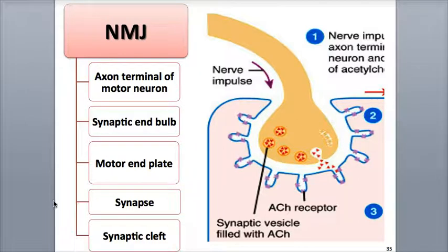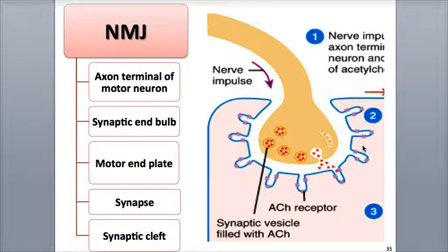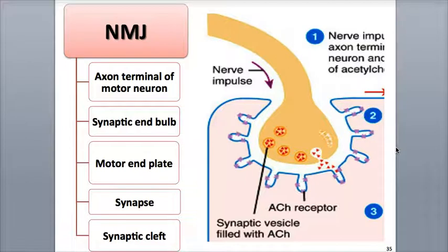The NMJ is a specific type of synapse, which is the area where a neuron and a muscle fiber communicate. Synapses are also found in between two neurons, or between a neuron and another type of target cell, such as a gland cell. The method by which neurons communicate with other cells is called synaptic transmission.